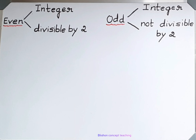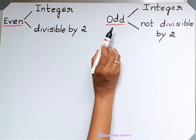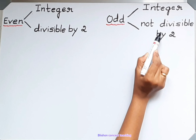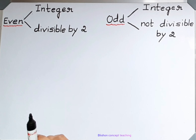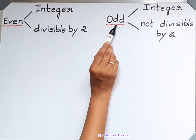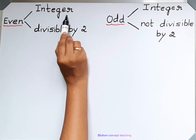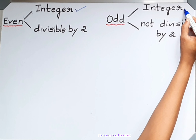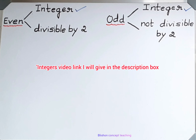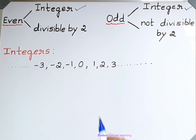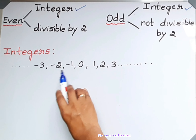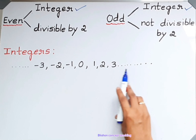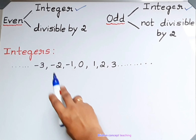To say a number is even or odd, it has to satisfy these two conditions. For both even and odd, the similar condition is it must be an integer. You know that 0, minus 1, minus 2, minus 3 and so on, 1, 2, 3 and so on — they are all integers.